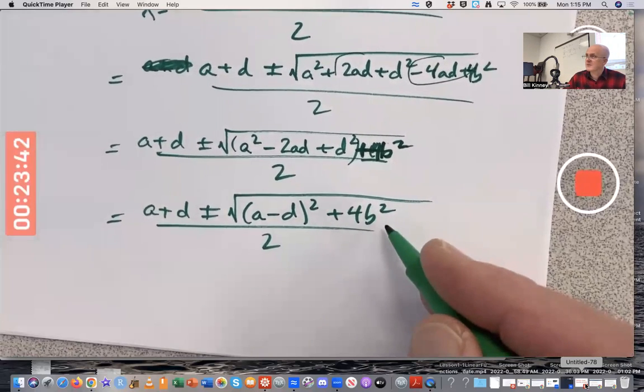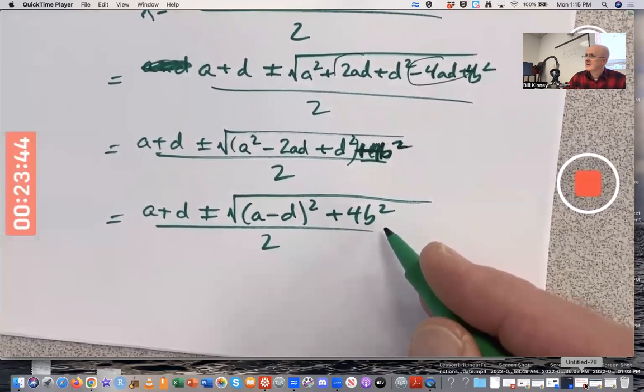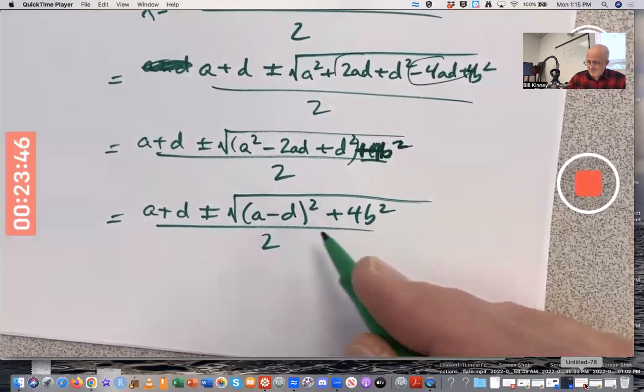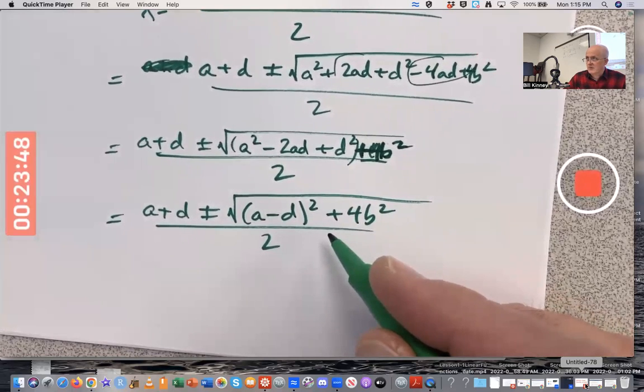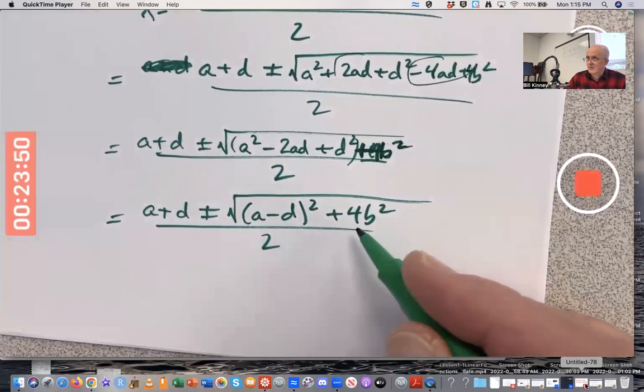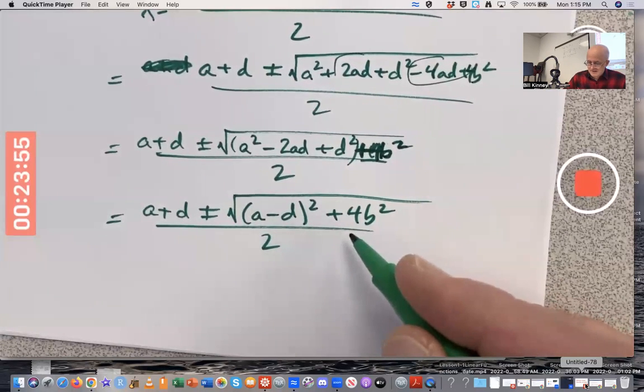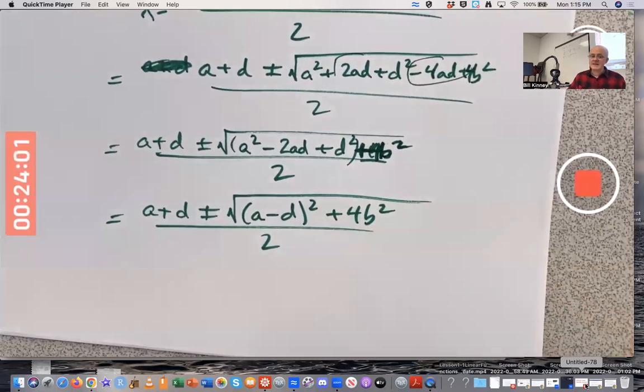You can't possibly get a negative number under the square root. Because A, B, and D are all real numbers. You square them, you're not going to get a negative number. There's no imaginary numbers here. Thing under the square root can never be negative. You're always going to get real eigenvalues. That's something significant.